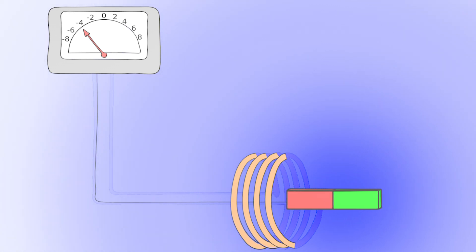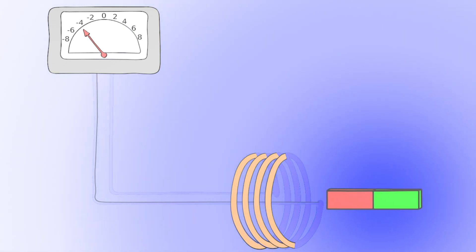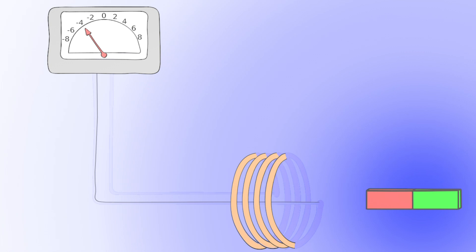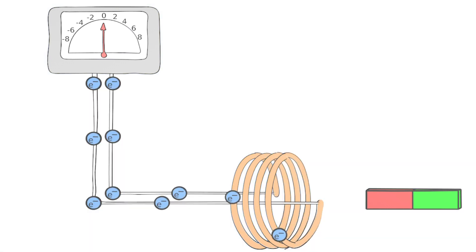The voltage is only induced again when the strength of the magnetic field that passes through the coil changes. But why does the pointer of the voltmeter move first in one direction and then in the other? To explain this clearly, let's look at the movement of some free electrons in the coil and in the power cables. First of all, the electrons are evenly distributed.